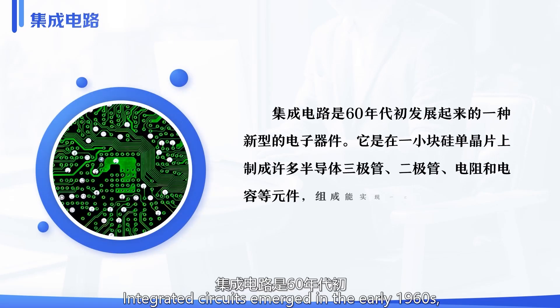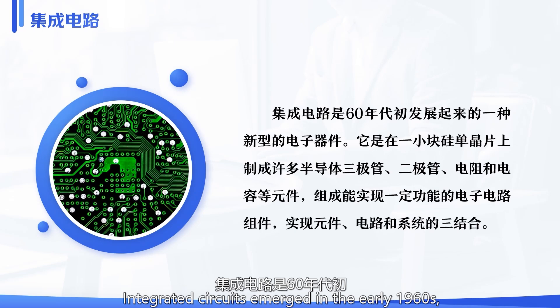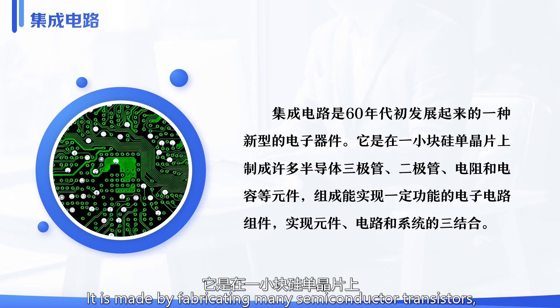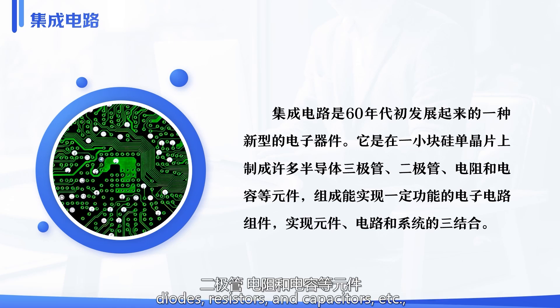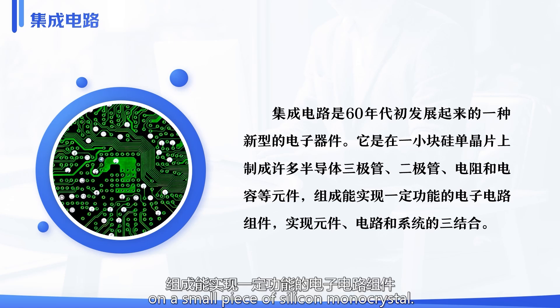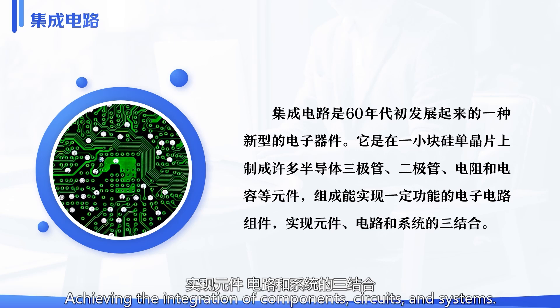Integrated circuits emerged in the early 1960s as a new type of electronic device. They are made by fabricating many semiconductor transistors, diodes, resistors and capacitors on a small piece of silicon monocrystal, achieving the integration of components, circuits and systems.